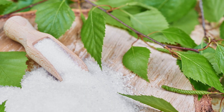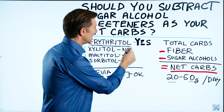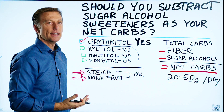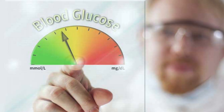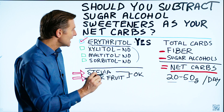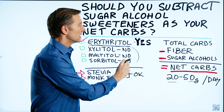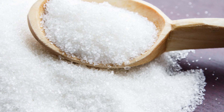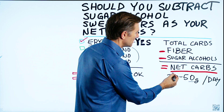However, xylitol, maltitol, and sorbitol do produce some reaction on the glycemic index. It's not incredibly high — it's a lot less than actual table sugar and definitely less than glucose — but it's not zero. For that reason, I would not recommend deducting these in your calculations. Only deduct erythritol, so you're being conservative and having more accurate numbers.